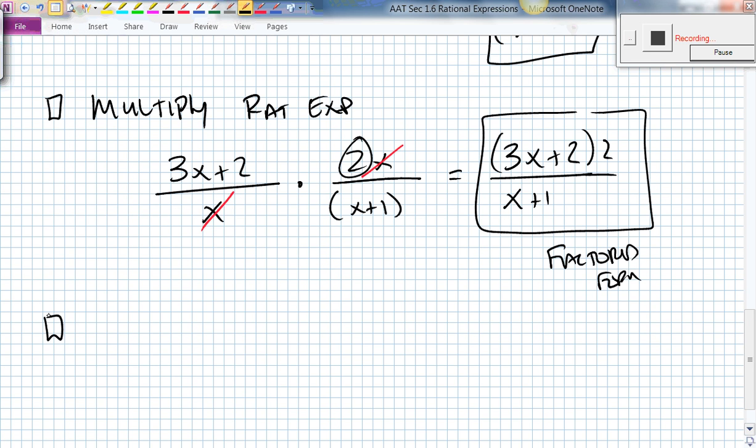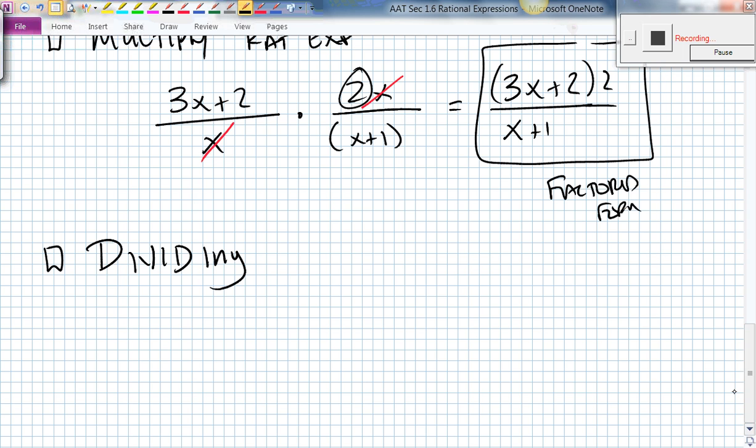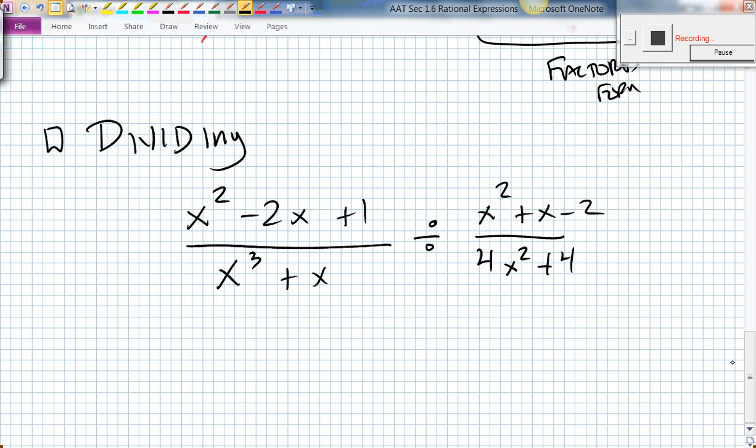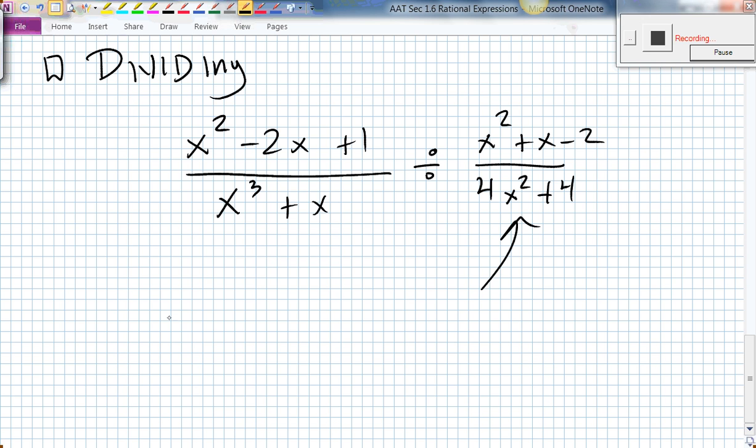The last big example is dividing. If we had x squared minus 2x plus 1 all divided by x to the third plus x, divided by x squared plus x minus 2 all over 4x squared plus 4. We can take the reciprocal and multiply. So I'll have x squared minus 2x plus 1 all over x to the third plus x times 4x squared plus 4, all divided by x squared plus x minus 2.